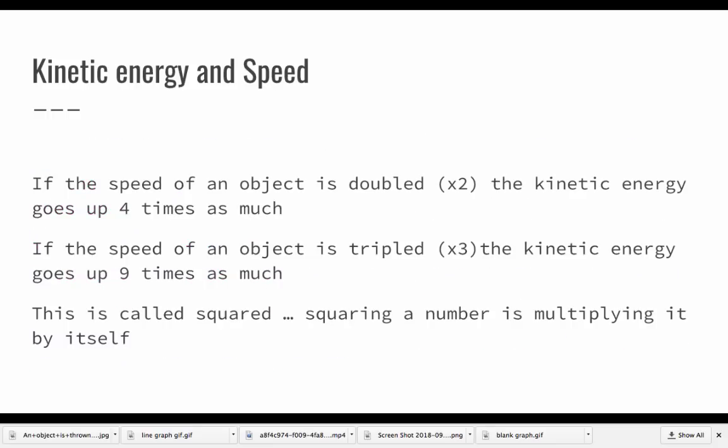Kinetic energy and speed. If the speed of an object is doubled, so times two, the kinetic energy goes up four times as much. If the speed of an object is tripled, times three, the kinetic energy goes up nine times as much.